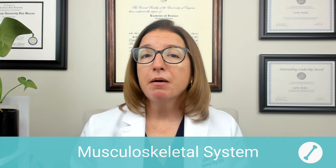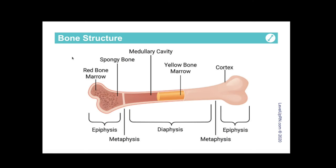If you can remember the phrase 'bones like bones,' that will help you remember that bones are attached to other bones through ligaments — L for 'likes' and L for 'ligaments.' Here's an illustration of a long bone from our Medical Surgical Nursing flashcard deck. The outer layer of the bone is the cortex, which is made up of dense, compact bone tissue.